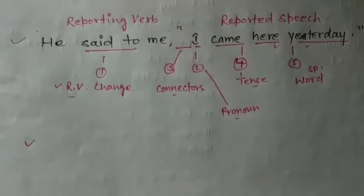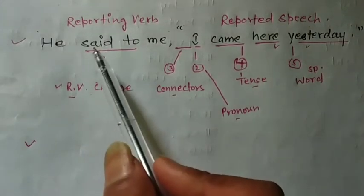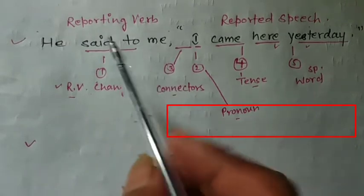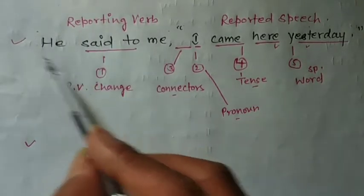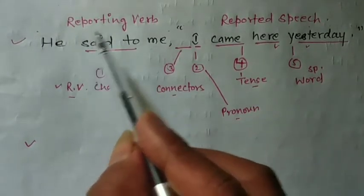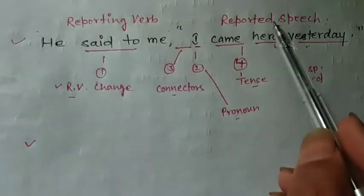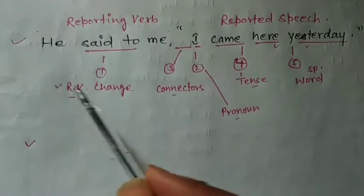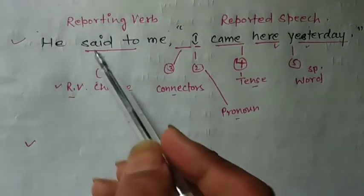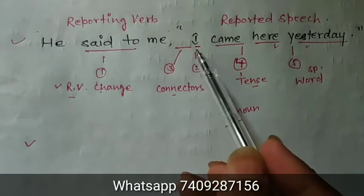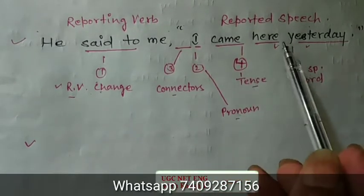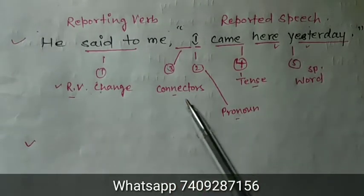Hello everyone, you are most welcome again on my channel. In the previous video I told you about the things in a sentence where we change from direct to indirect speech. First was the reporting verb, and the reported speech is here in inverted commas. We change the reporting verb, and the second change will be in pronouns, third connectors and tenses, and some special words.